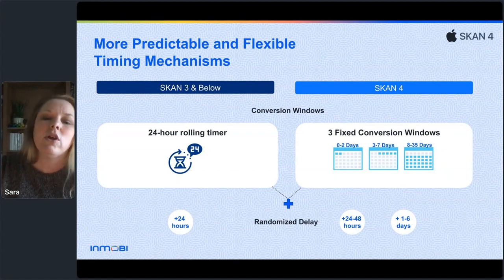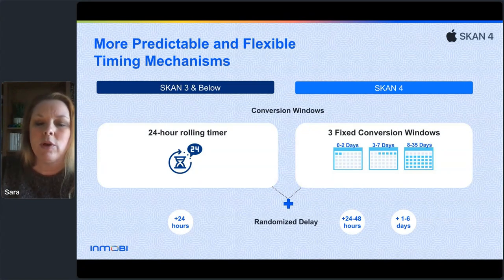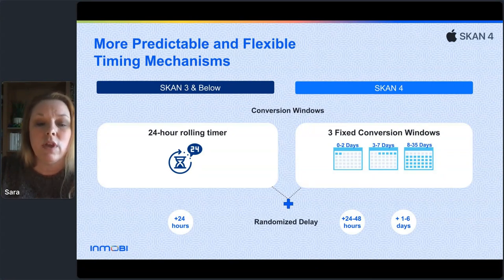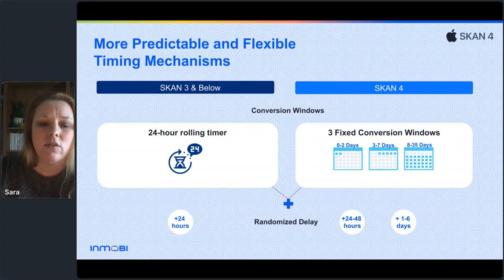One thing people rejoiced about most when SKAN 4 came out is the removal of the pesky rolling timer that kept resetting for 24-hour periods up to 63 times, replaced by three fixed conversion windows: 0–2 days, 3–7 days, and 8–35 days, plus the ability to lock each window early. There is still a randomized delay once the conversion window closes — 24 to 48 hours for the first window, and a one to six day delay for the second and third postbacks.